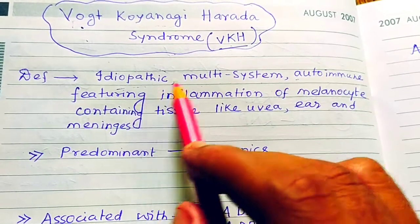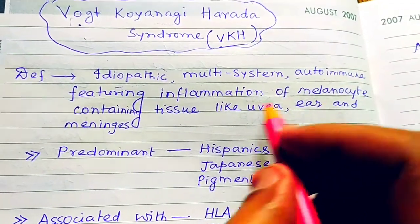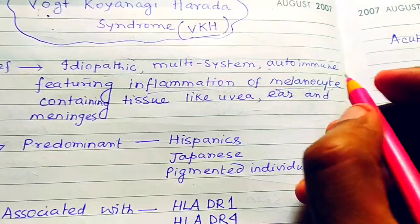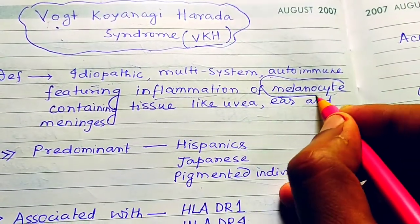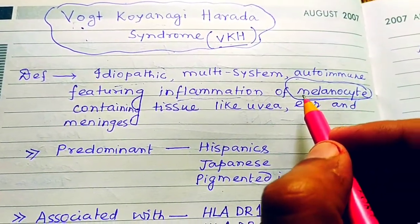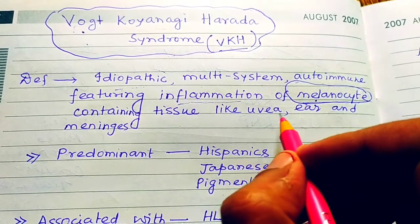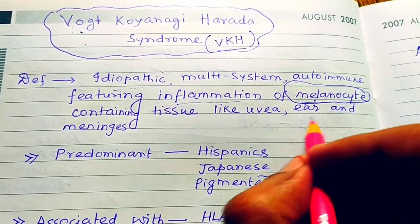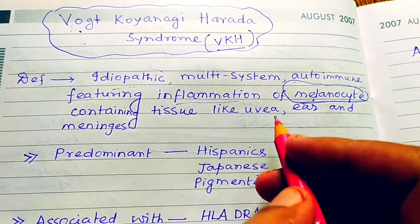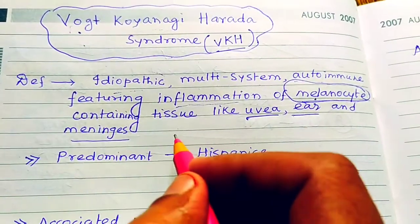The three important features are: idiopathic, multi-system, and autoimmune — featuring inflammation of melanocytes. The melanocytes present in different tissues like the skin, uvea, ear, and meninges will all be inflamed. So inflammation of melanocyte-containing tissues like uvea, ear, and meninges — this is the definition.